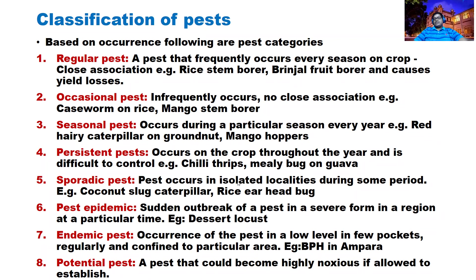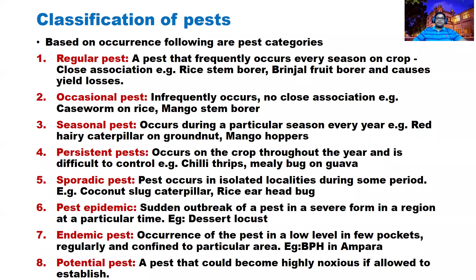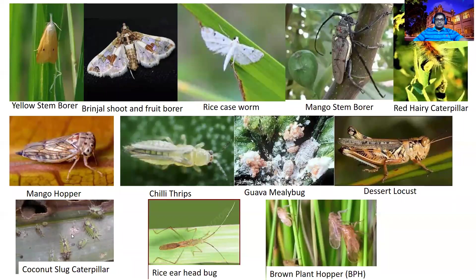Sporadic pest means pests occurring in isolated localities during some periods — for example, sometimes in Anuradhapura, Kurunegala, or Nuwara Eliya district. Coconut slug caterpillar and rice earhead bug are examples of sporadic pests that appear only in isolated localities.